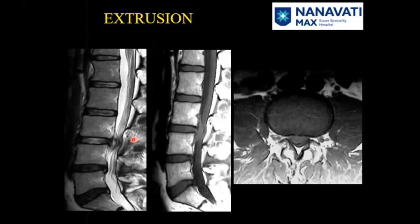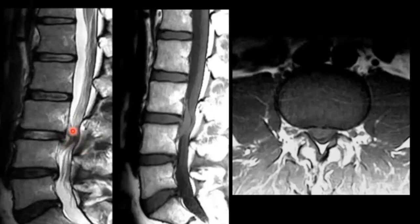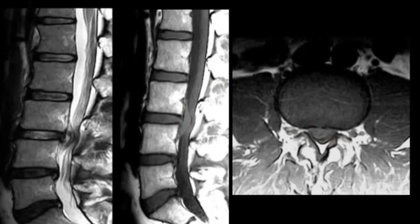Here is herniation of the L3-4 disc. If you look at the base of the herniated disc, it is narrow. The apex is very broad. The nucleus has come out through the disrupted annular fibres — the base is narrow and the apex is very broad. So this is extrusion of the L3-4 disc, which is central and right paracentral. The thecal sac is severely compromised.